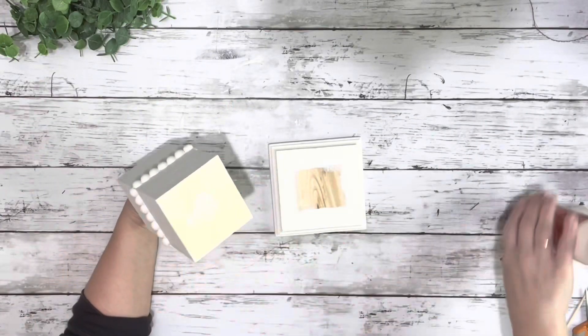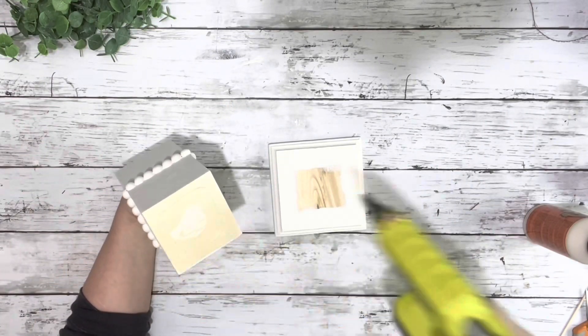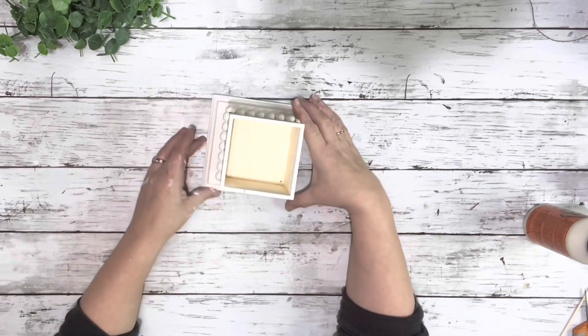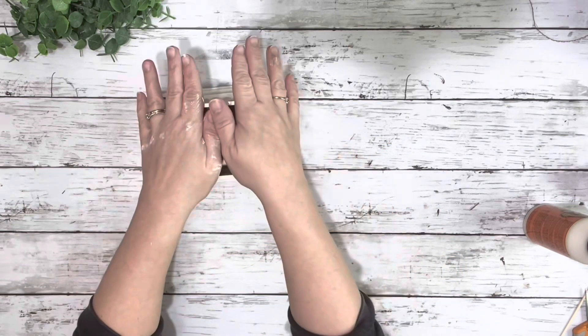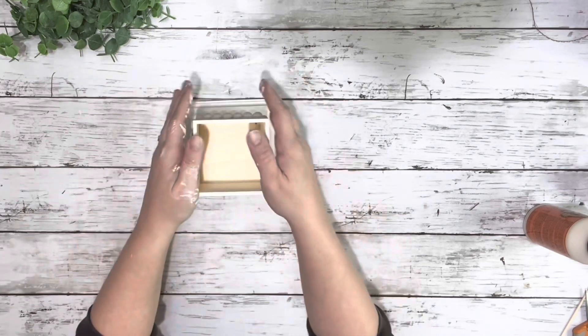Once those were dry, I took some wood glue and hot glue and put that on the bottom of the two little boxes. Placed that in the center of the little wooden plaque, making sure it was nice and even.